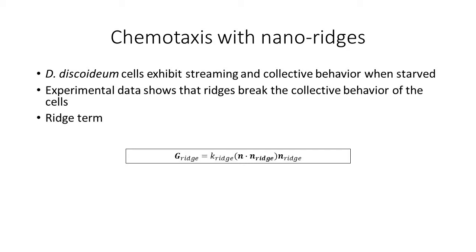So this is just the math that goes with the ridges. Basically, it's a dot product times a strength factor, which is the K sub ridge.